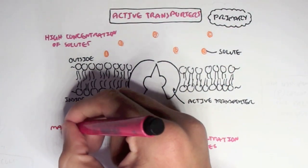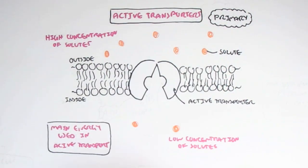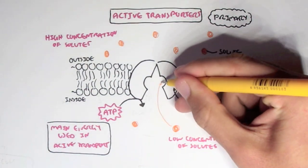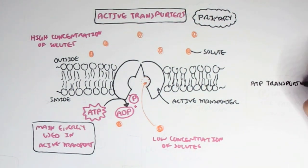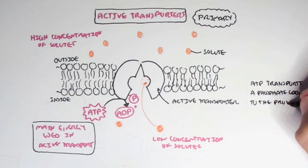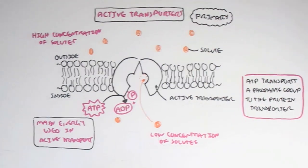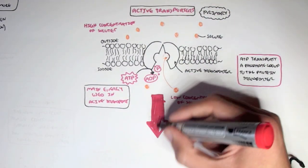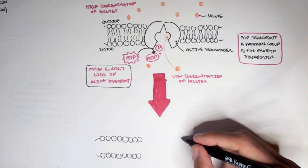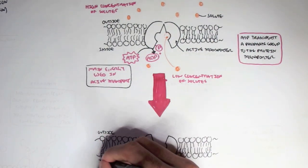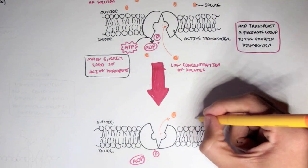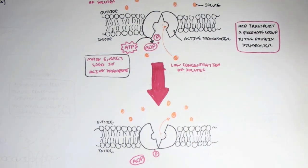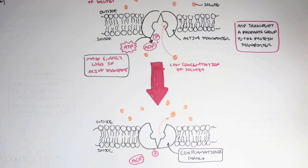Here is a primary active transporter. The main energy used for active transport is ATP. A solute will bind to the active site of the transporter, and ATP will be used. A phosphate group will be attached to the transporter, and when ATP is used, this protein transporter will flip — because energy is used, causing it to flip. The phosphate group remains bound to the protein, and the solute is released to the outside, moving against its concentration gradient.